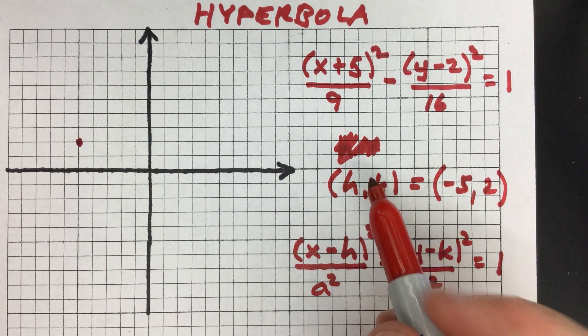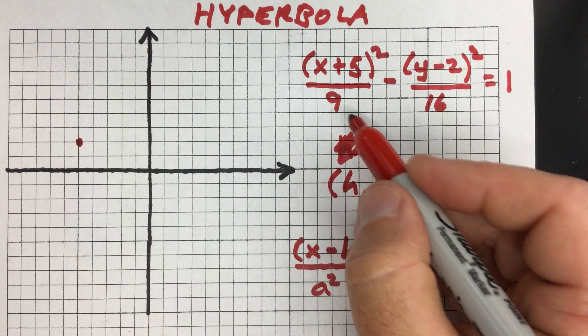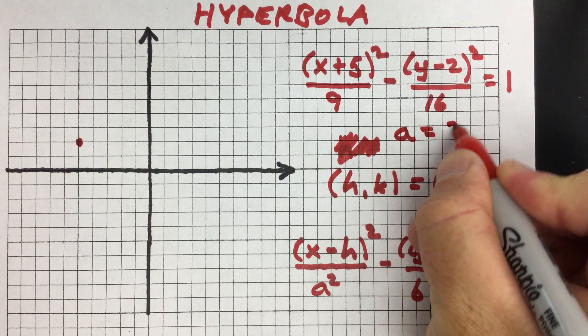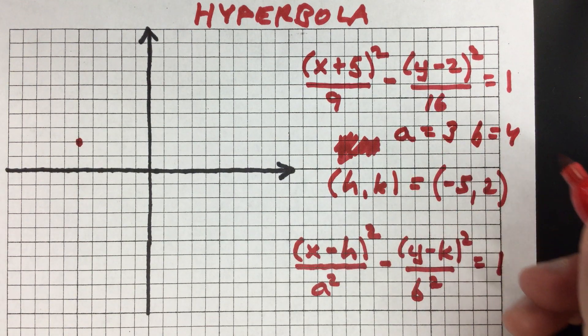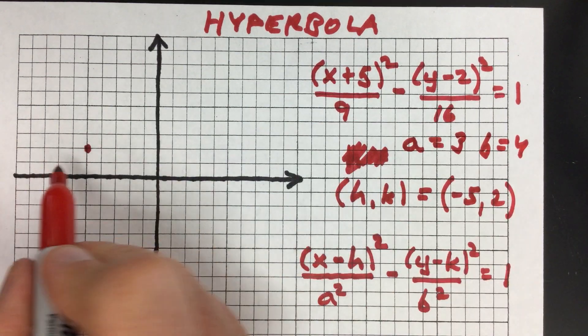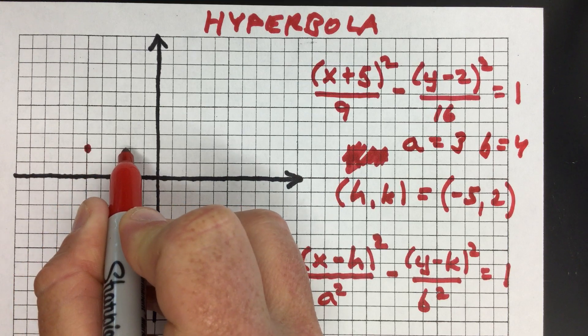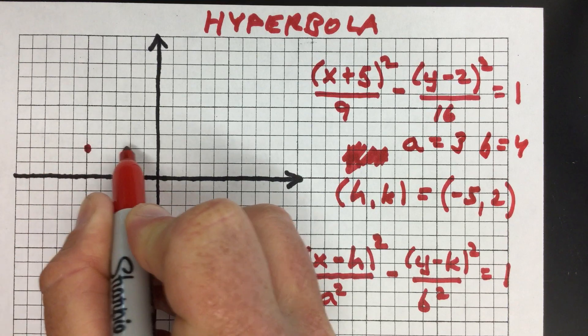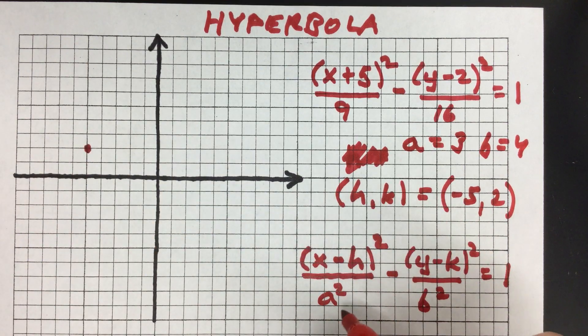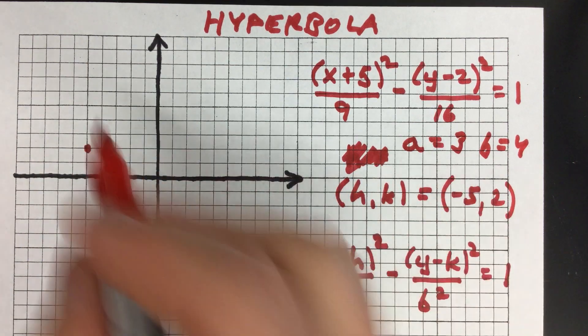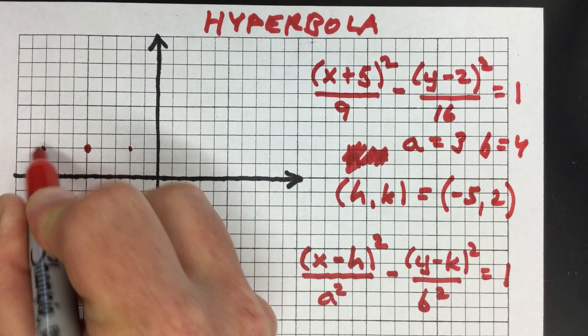Then the next important thing to look at are your values of a and b. Here you can tell that a is going to be 3 and b is going to be 4. This value of a tells you the half width of a little box that you could draw around this center point. So you go over 3 units this way and this way.